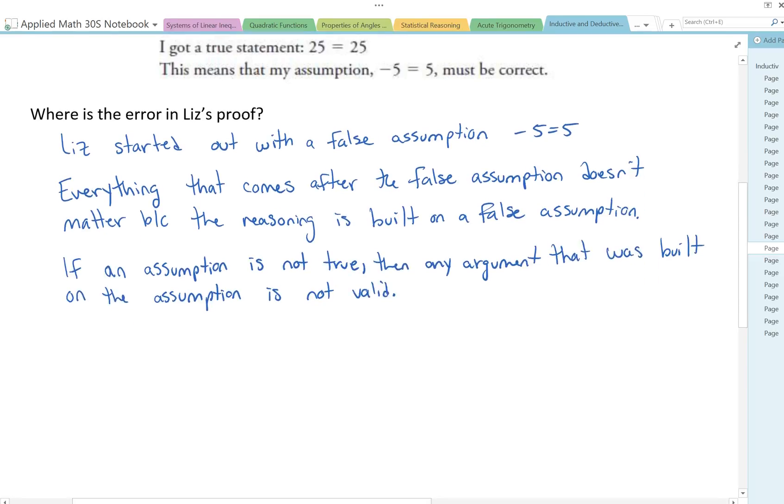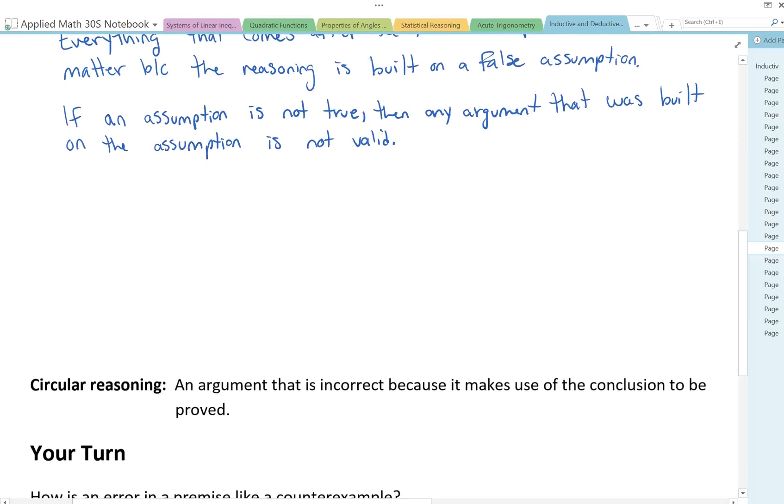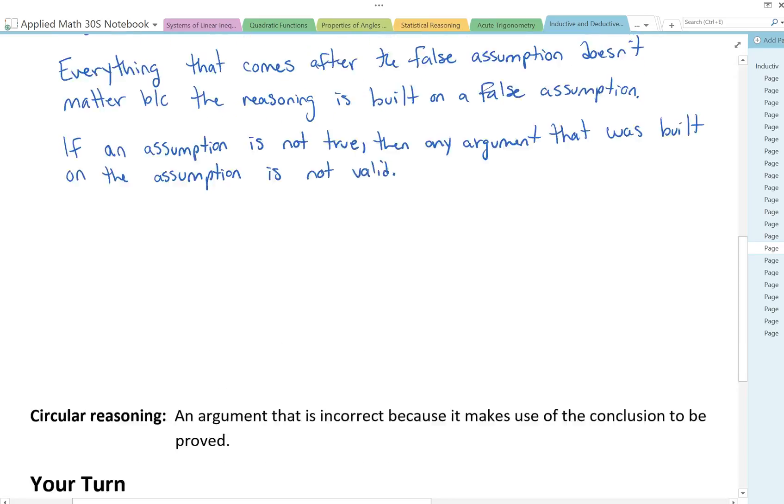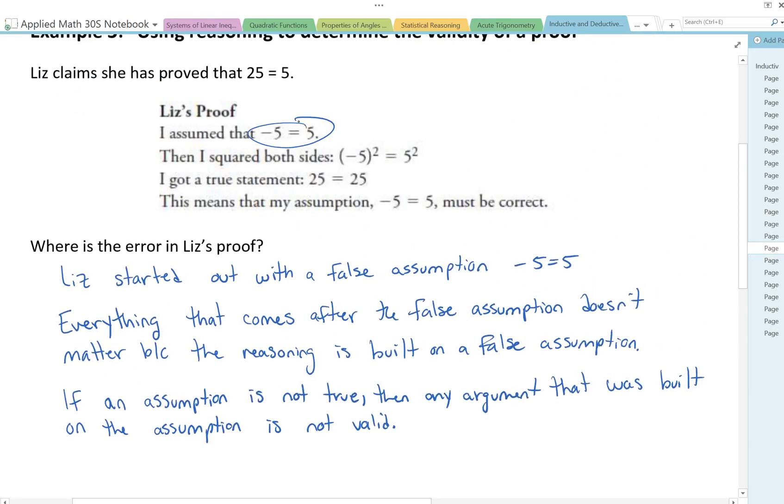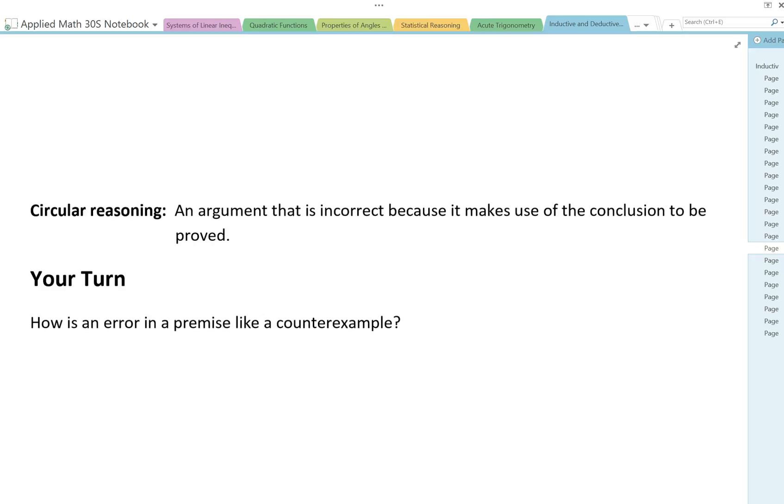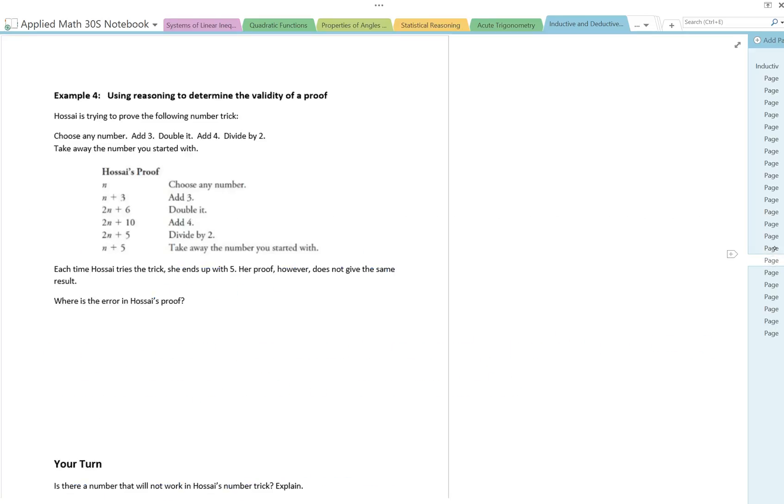If an assumption is not true, then any argument that was built on the assumption is not valid. We talked a little bit earlier about circular reasoning. Circular reasoning is an argument that's incorrect because it makes use of the conclusion to be proved. This is what she wanted to prove, so she started with that and ended up with what she started with, which is invalid. How is an error in a premise like a counterexample? A single error invalidates the argument, and in the same way, a single counterexample makes a conjecture invalid.